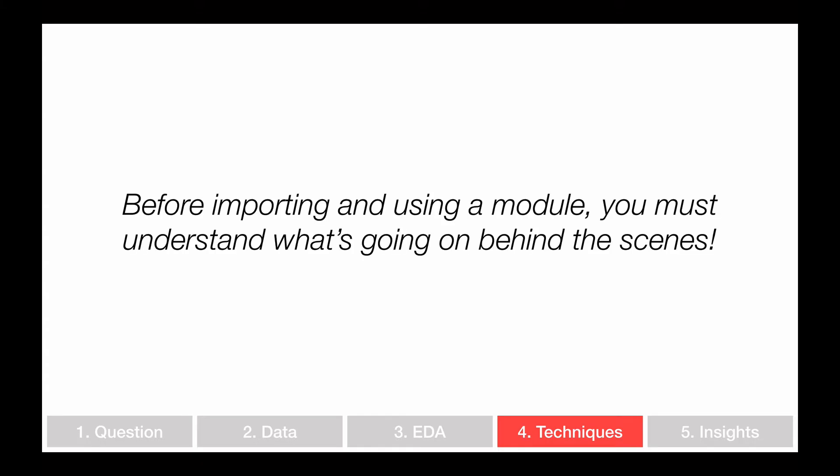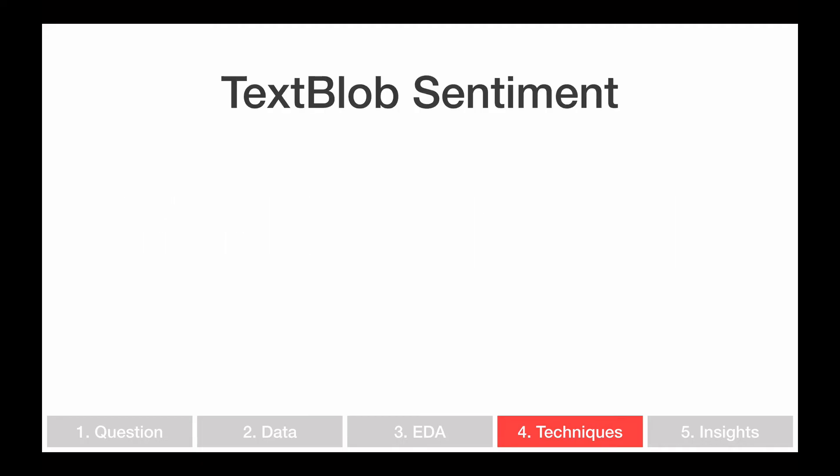Before you import and use a module, you always have to understand what's going on behind the scenes. I mentioned this in the first part of this video series with the data science Venn diagram and the danger zone. If you know how to code and know what you want to do, you can import a library and start using it — but it's really dangerous if you don't understand what's happening behind the scenes. You really should understand the math, so before we dive into the Jupyter notebook, let's go over what's actually happening in TextBlob.